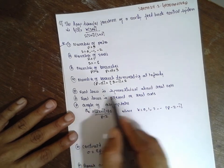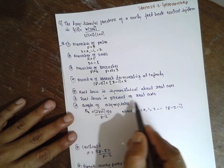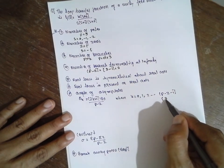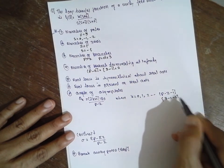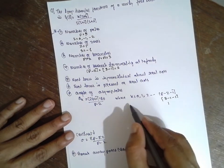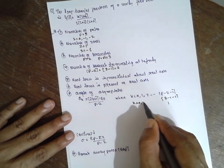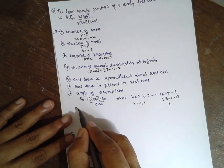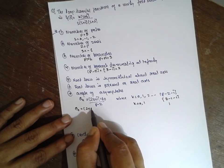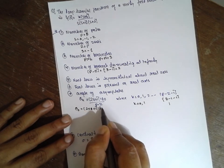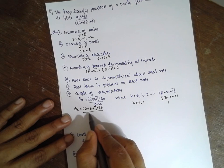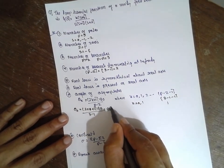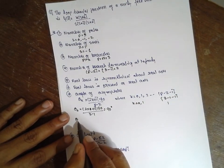Root locus is symmetric about the real axis. Root locus is present on the real axis. P is 3, Z is 1 — P minus Z is nothing but 1. Therefore K is equal to 0, 1. When theta at the numerator is 0: 2 into 0 plus 1 into 180 divided by 3 minus 1 is nothing but 90 degrees. Similarly, at the bottom, K equals 1 is nothing but 270 degrees.